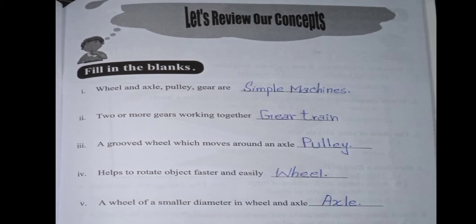Number 3, a grooved wheel which moves around an axle. The answer is pulley. Helps to rotate object faster and easily. Wheel is the answer. And number 5 is a wheel of a smaller diameter in wheel and axle. Yes, of course it's definitely axle.